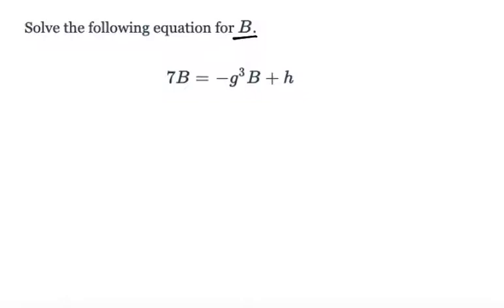In this equation we have a couple of b's - this term with 7b and this term with negative g cubed b. So in order to solve for b, I want to first get all the terms with b onto the same side of the equation.